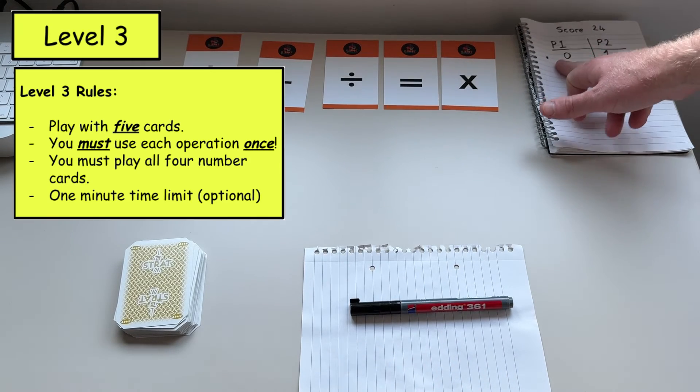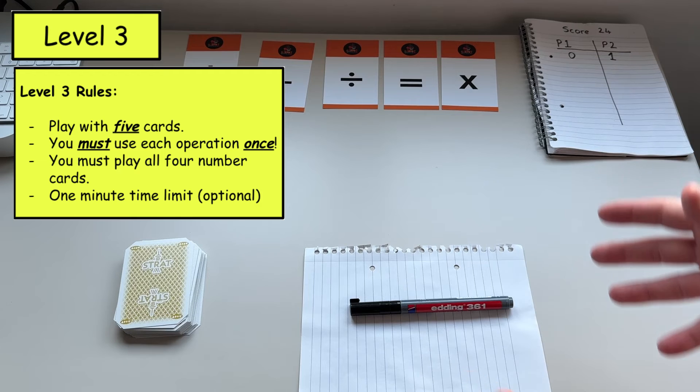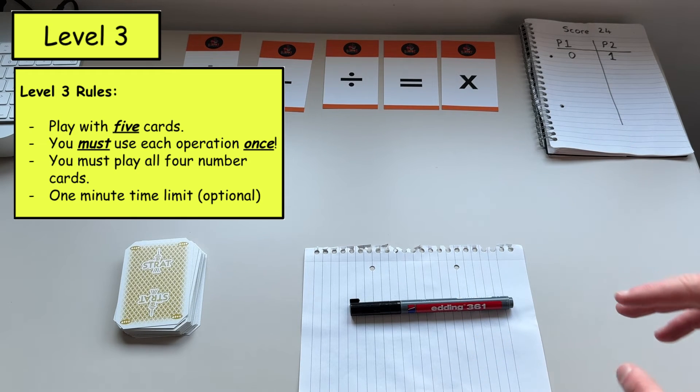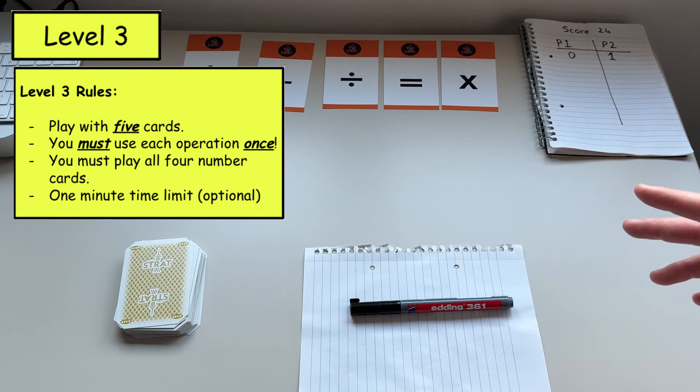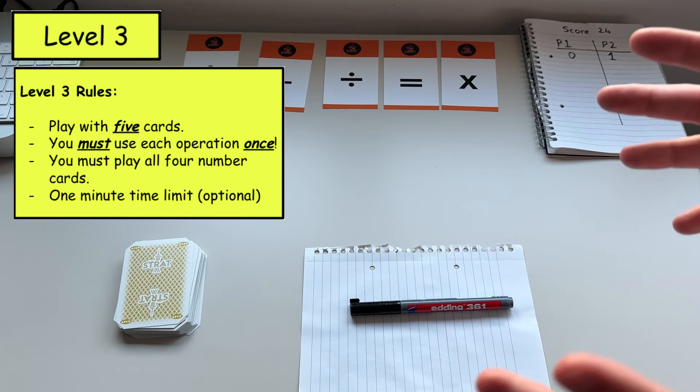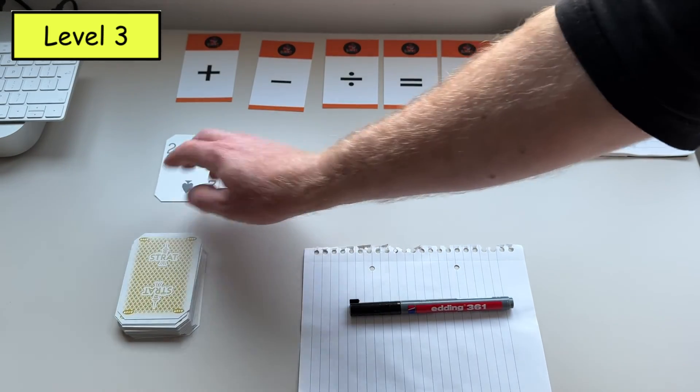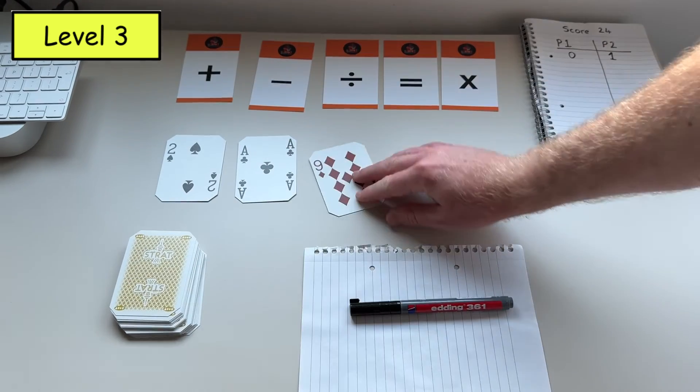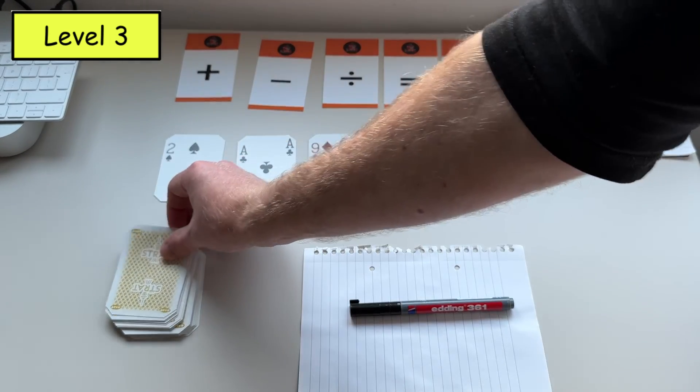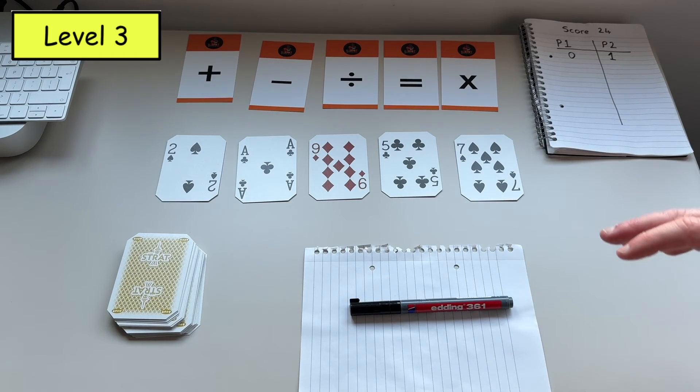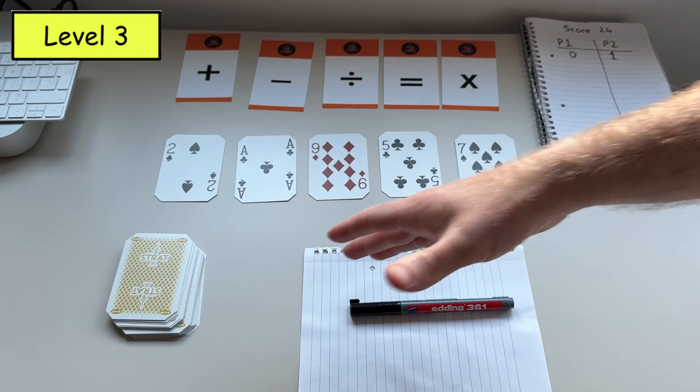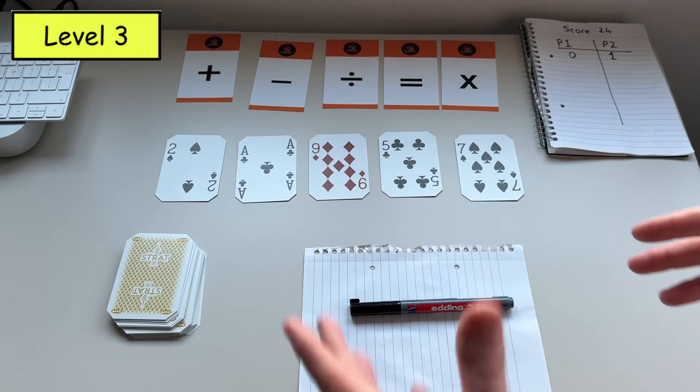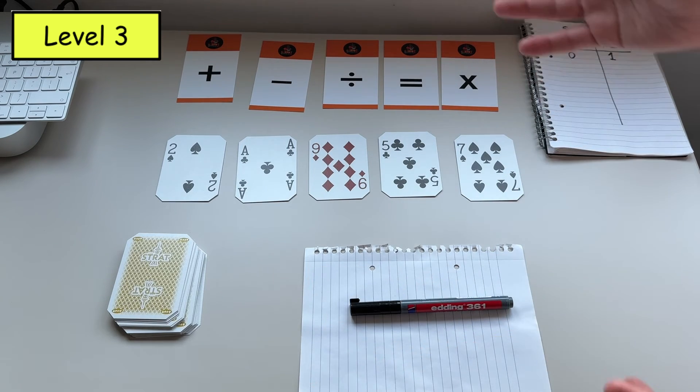So we're back to player one's turn. And for the purpose of this video, the next turn that player one is going to take is going to be at level three. So level three, you can set a timer of just one minute to find an answer, which really puts the player under pressure. For level three, the difference is the player will draw five cards in total instead of four cards. And this time they must use every single operation. So involved in their sum, they have to have an addition, subtraction, a division and a multiplication.